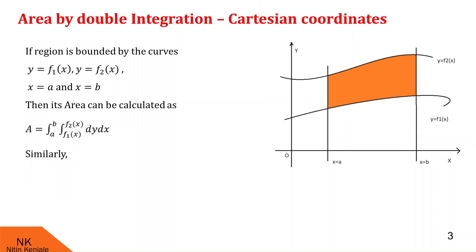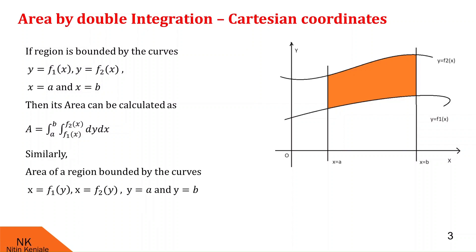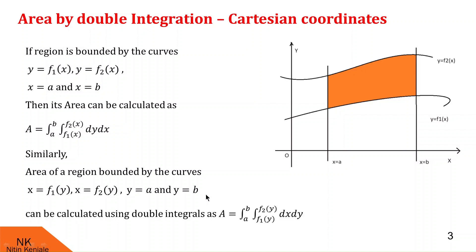Similarly, if the area is bounded by the curves x = f1(y), x = f2(y), y = a, and y = b, then the area is given by the double integral of dx dy, with inner limits from f1(y) to f2(y) and outer limits from a to b.